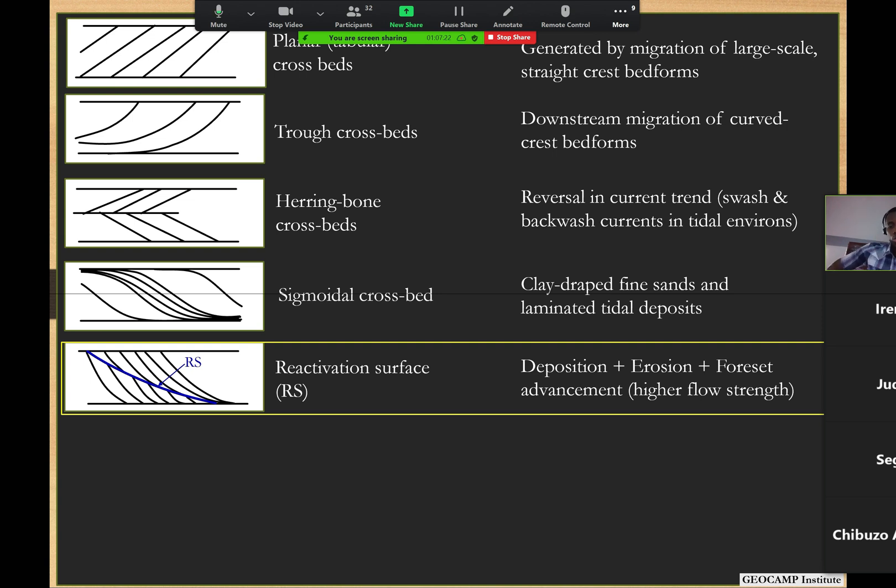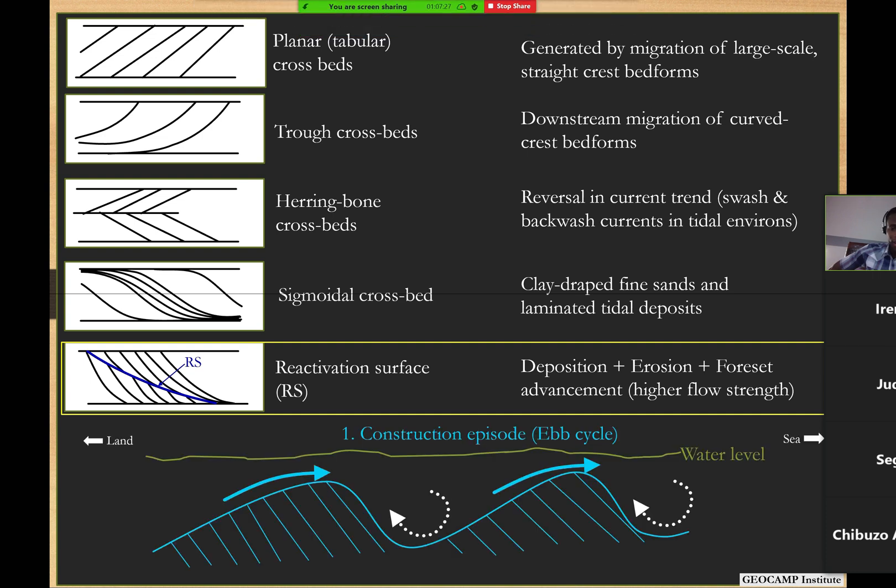Reactivation surface is just one signature also of tidal systems. I have an example of how that is formed. This one is even better annotated. We have the land to the left and the ocean or sea to the right, and that's the water level shown in green there. We have, let's say, in the first phase which is called the ebb cycle.